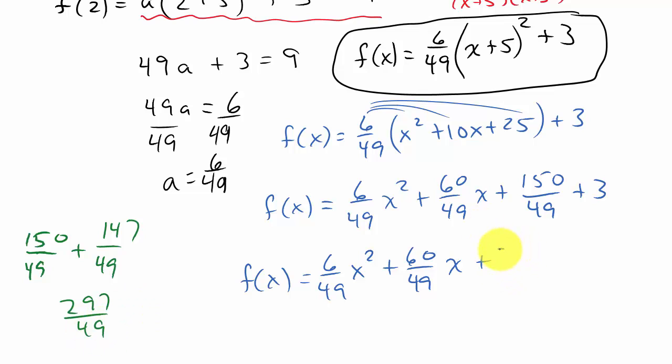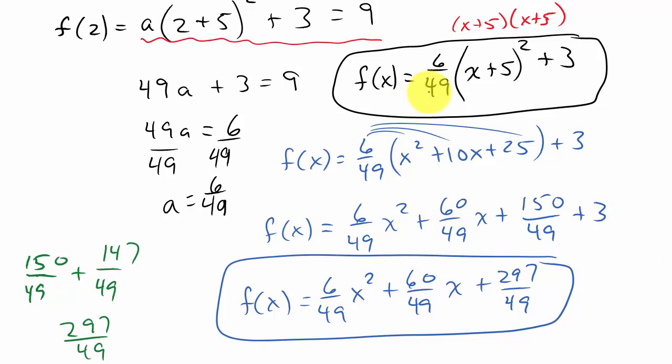So 297 over 49. Yeah, I mean, this one was kind of messy with all the fractions and everything. But, you know, this answer is correct. This answer is correct. Just depending on what form you need to have it in. So hope that helped.